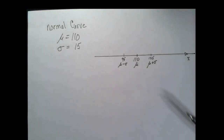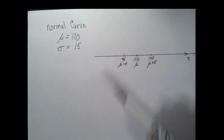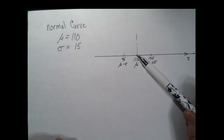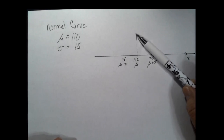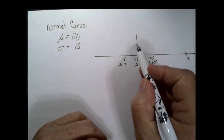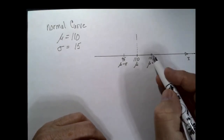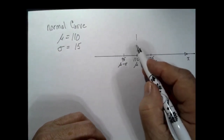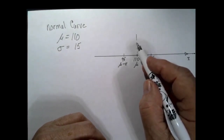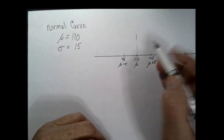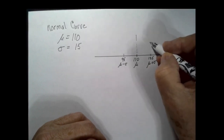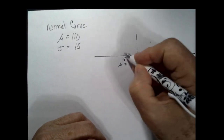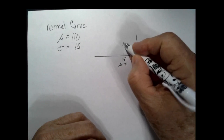In our case, those values are 125 and 95 respectively. The high point of the curve will be at the mean. The height at one standard deviation above and one standard deviation below will be 60% of that highest point, so it's a little above halfway up. Let's plot those two points.